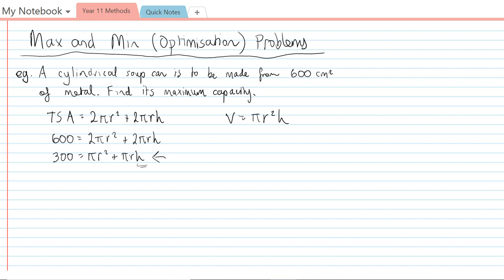So first thing first, I'm going to take away πr² from both sides. 300 - πr² = πrh. And then all I need to do is divide by πr. So (300 - πr²) / πr = h.